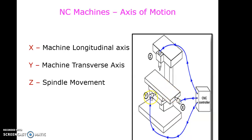Y is associated with the saddle, so this is called the saddle movement. By this way, we can control any NC machine in three mutually perpendicular directions.